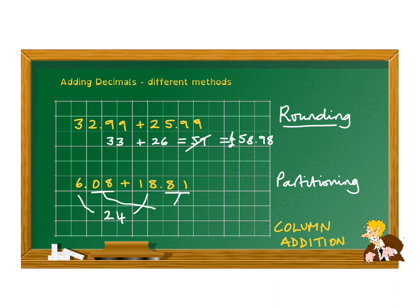We could even partition further and add the 0 and the 8, then the second 8 hundredths and the one hundredth, and that will give us 0.89. Therefore the answer is 24.89.